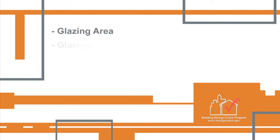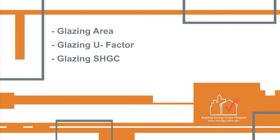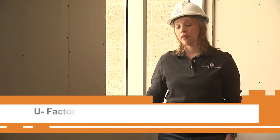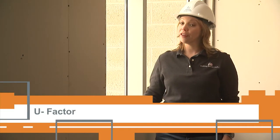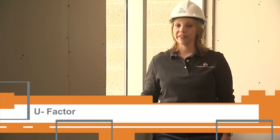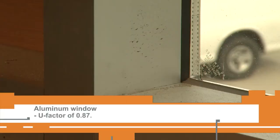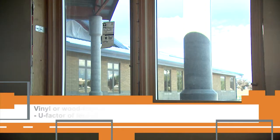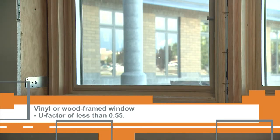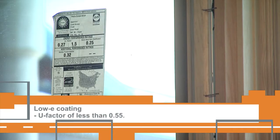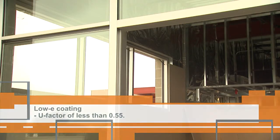Glazing area, glazing U-factor, and glazing SHGC. The U-factor is a measure of a window's efficiency — the lower the U-factor, the greater the efficiency. As an example, an aluminum window with two panes of glass may have a U-factor of 0.87. Vinyl or wood frame windows, on the other hand, have U-factors less than 0.55. Adding low-E coatings will typically drop the U-factor to between 0.40 and 0.30.